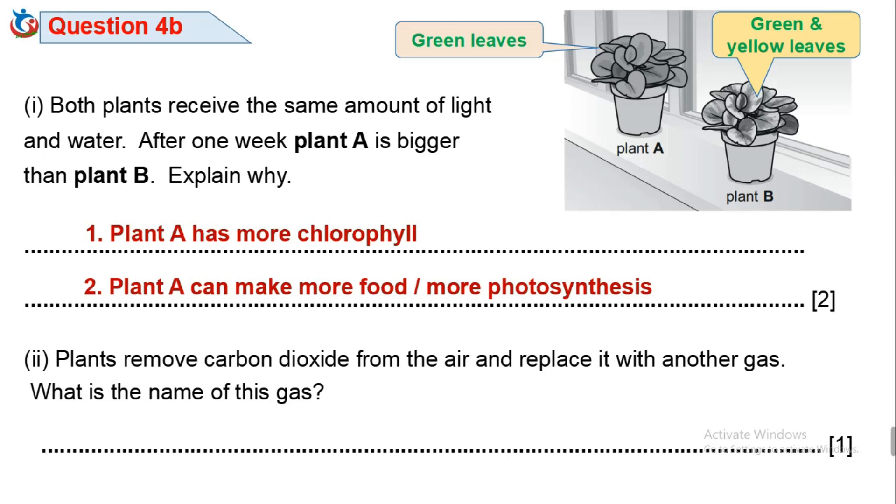Question 4B2. Plants remove carbon dioxide from the air and replace it with another gas. What is the name of this gas? During photosynthesis, plants take carbon dioxide from the air to make their own food and release oxygen to replace carbon dioxide in the air. So oxygen is produced by plants during photosynthesis.